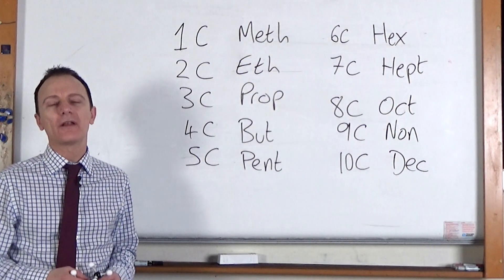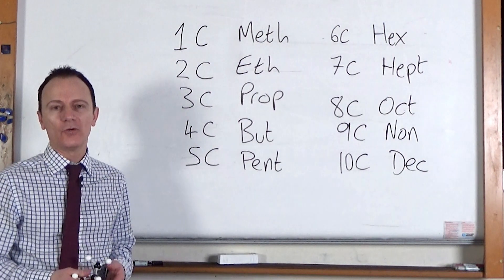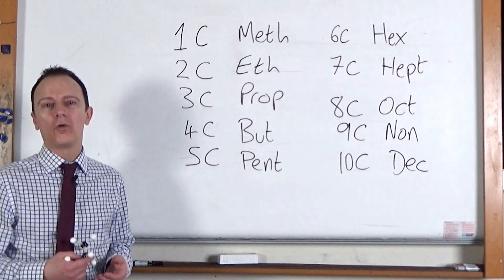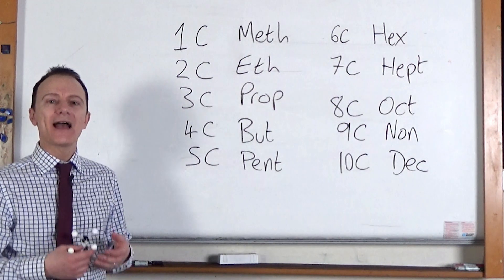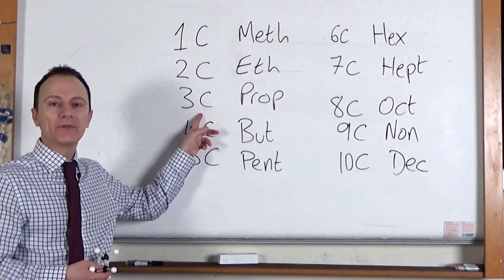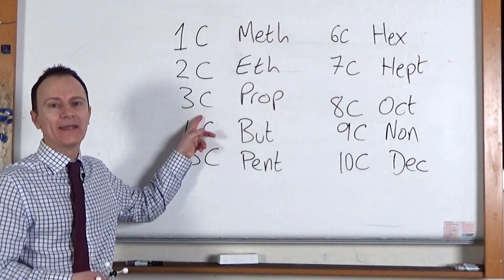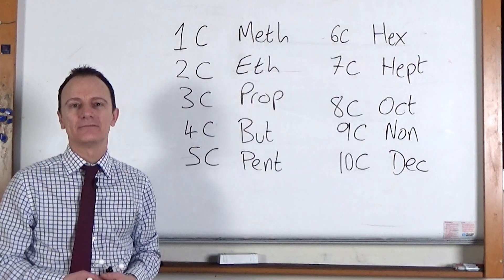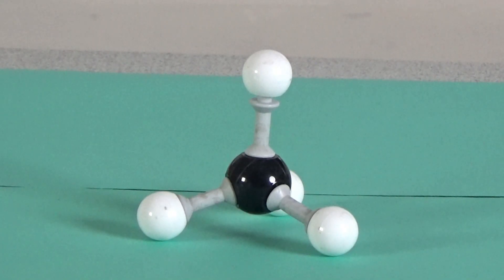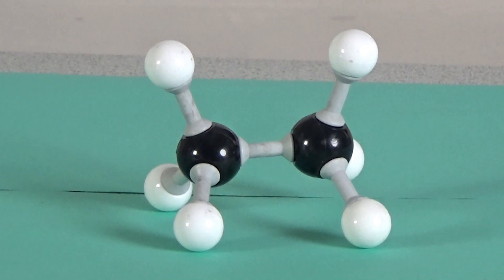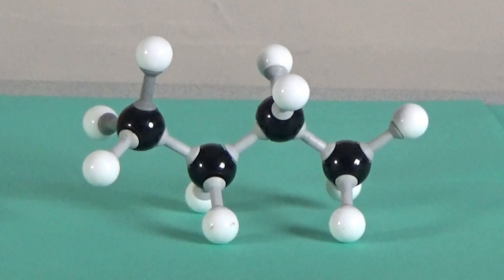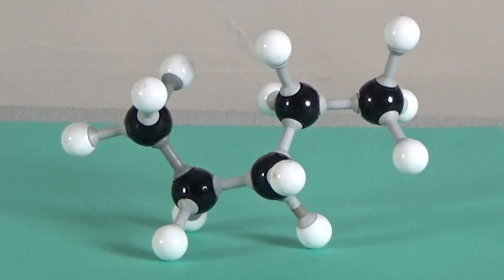The ending part of a molecule's name depends on what family of chemicals or homologous series it belongs to. So alkanes all end in 'ane'. So if we had an alkane molecule that had three carbons in its main chain, it would be called propane. If we had an alkane with six carbon atoms, it would be called hexane. An alkane with one carbon atom is called methane, two carbon atoms would be ethane, propane would have three carbon atoms, butane would have four, and a pentane molecule has five carbon atoms, and so on.